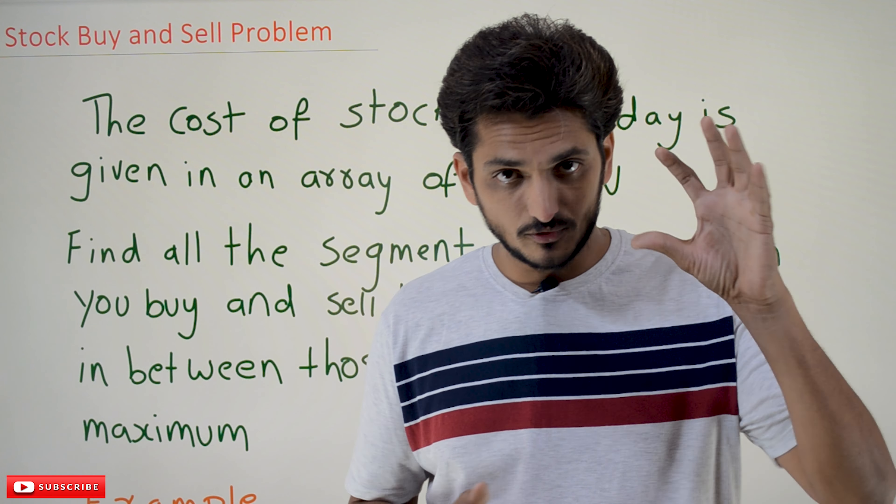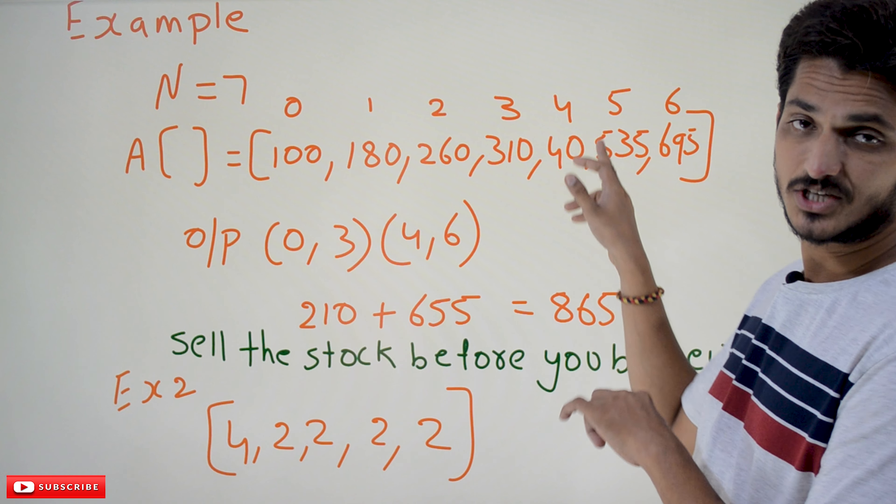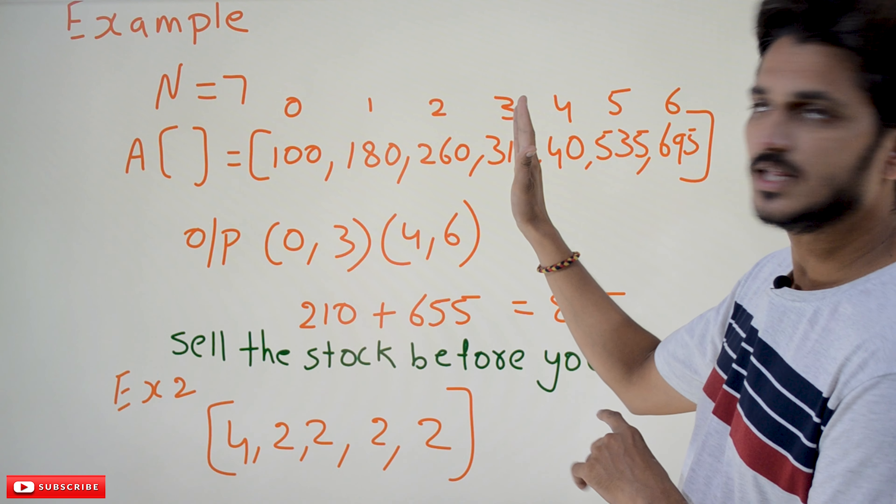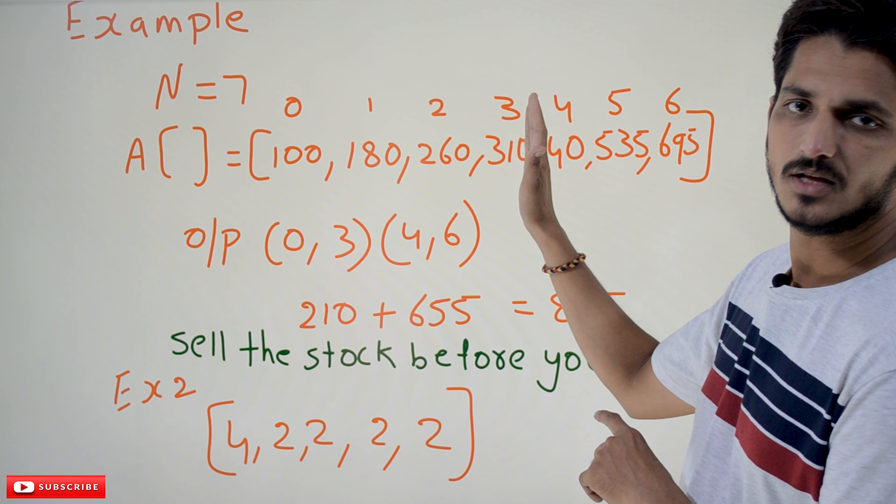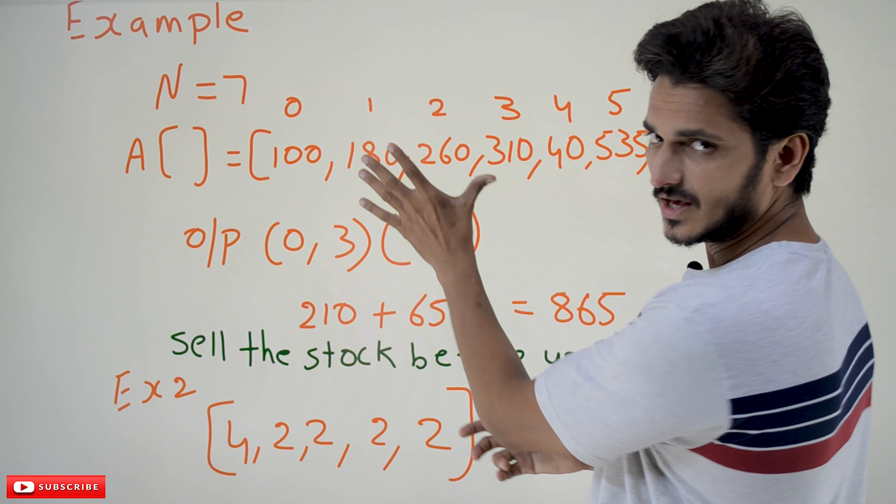On the first day the cost of the stock is 100, second day is 180, third day is 260, fourth day is 310, fifth day is 40, sixth day is 535, and seventh day is 695. These are the prices of the stock. From this we need to find all segments that give maximum profit.